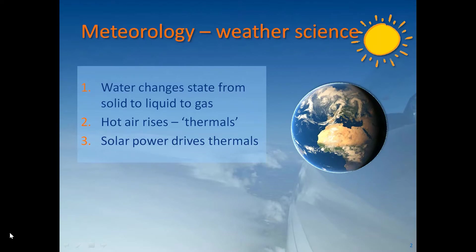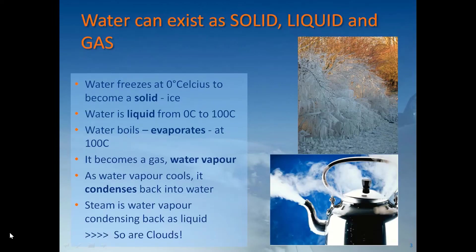First, water changes state from solid to liquid to gas. The second thing is that hot air rises — glider pilots call it thermals. And the third thing is that it's all driven by the sun — it's all solar power. So let's think about water. Water freezes at zero degrees Celsius to become a solid. We call it ice, and then it's liquid from zero up to 100°C where it boils or evaporates to become a gas, water vapour.